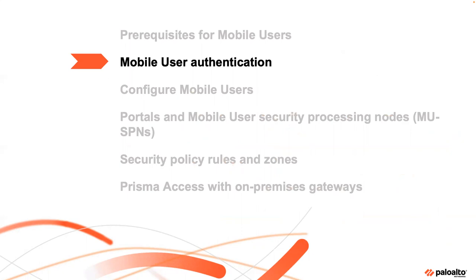Your users are going to have to authenticate. The Global Protect mobile user solution with Prisma Access — or even on-premise, or any combination thereof — makes a really good self-contained user ID solution. In fact, it's the most accurate one. When a user connects to Global Protect, we authenticate them so we know who they are. We hand them an IP address so we know what IP address they're using. So we've got that user-IP mapping already without having to set up anything else.